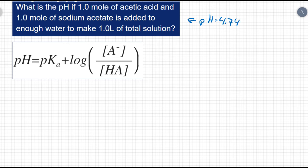we found that the pH was 4.74. We did that because we said the concentration of H plus was going to equal the Ka value, which for this substance was 1.8 times 10 to the negative 5, or that pH equals pKa.